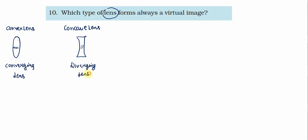Jo rays of light hain, ek converging lens mein do actually meet at some point. And ish case mein jo parallel rays hain woh focus mein meet ho jati hain.